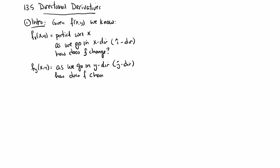The kicker is, we might be interested in what goes on if we go in yet a different direction, like not just i and j. So how about, let's say, we run in the direction of a vector a, which is 2i plus 3j. How does f change?